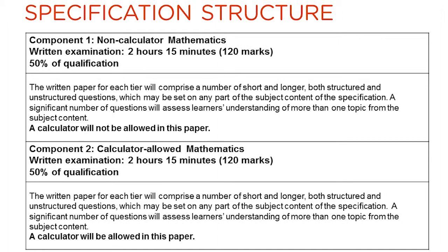There are two components in the new WJC EDUCAS GCSE. The first component is a non-calculator mathematics component — a written examination lasting 2 hours and 15 minutes, carrying 120 marks, making up 50% of the qualification. The second component is calculator-allowed mathematics, also a written examination lasting 2 hours and 15 minutes, carrying 120 marks, making up the other 50% of the qualification.